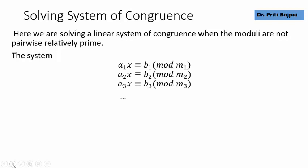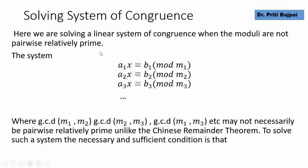What do we mean by such a system? If we are given a system with congruences a1·x ≡ b1 mod m1, a2·x ≡ b2 mod m2, a3·x ≡ b3 mod m3, we can have many more congruences. When we take the moduli pairwise — that is m1,m2 and m2,m3 and m3,m1 — their GCD may not necessarily be 1, so the Chinese Remainder Theorem cannot be applied.